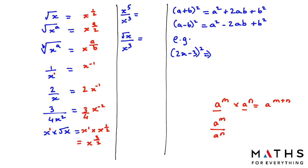The division rule for exponents: if we are dividing, we subtract the powers — a to the power of m divided by a to the power of n equals a to the power of m minus n. For example, x to the power of 5 over x to the power of 3 gives x to the power of 2. For square root x over x cubed: half minus 3 gives negative 5 over 2. You cannot leave x in the denominator — you must write it in the numerator before you differentiate.